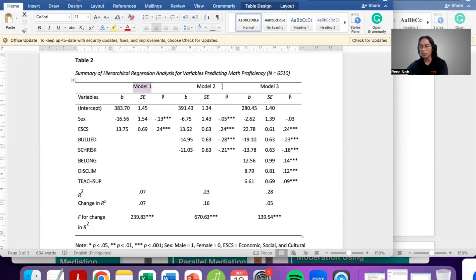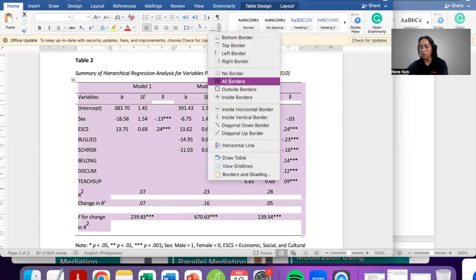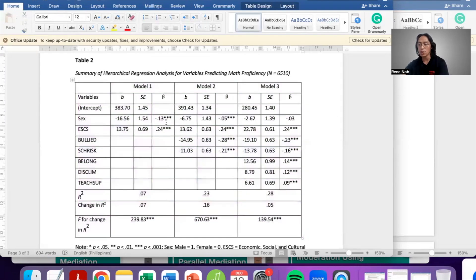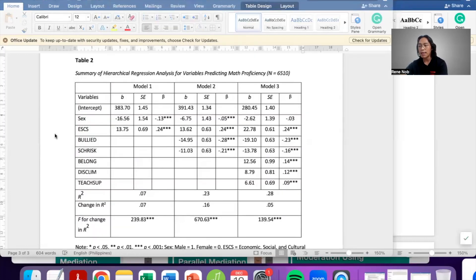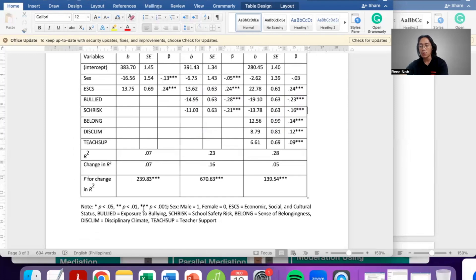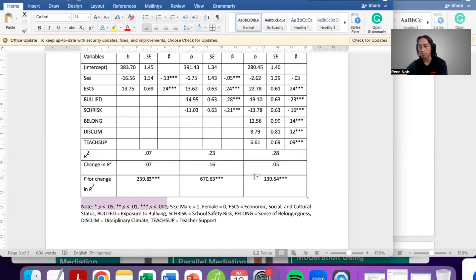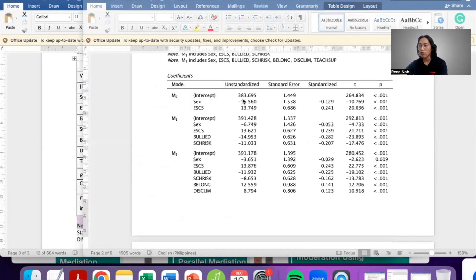I did this for the three models. So we have here model one, model two, and model three. For model one, this only includes information about sex and socioeconomic status. For model two, sex, socioeconomic status, bullying, and school safety risk. For model three, sex, socioeconomic status, bullying, school safety risk, belongingness, and teacher. If you want to see how this looks like with the borders, so that you can visualize what you need to do, some cells are merged as you can see. Instead of reporting the T values and the P values, I simply put an asterisk on the significant regression coefficients. Similarly, I put a note here below so that the reader knows what the asterisks mean.